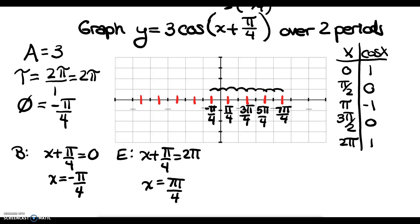Now I count 8 of these little increments backwards: 1, 2, 3, 4, 5, 6, 7, 8 — landing at negative 9 pi over 4. The middle mark for that backward period is negative 5 pi over 4, the halfway mark is negative 3 pi over 4, and the quarter mark back there is negative 7 pi over 4.